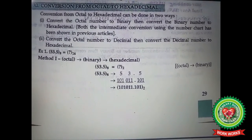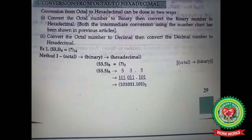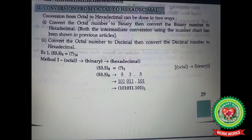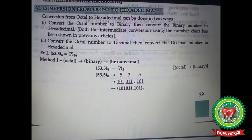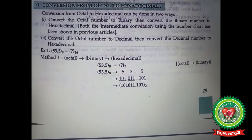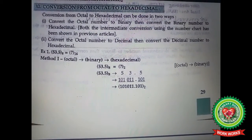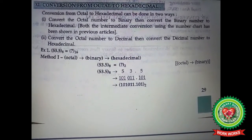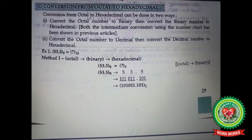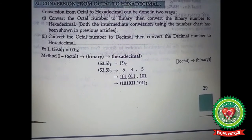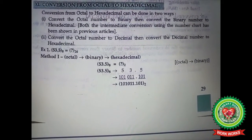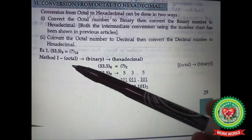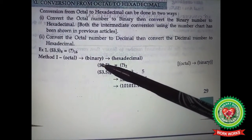Open your book at page number 29. The next conversion is octal to hexadecimal. There are two ways to do this. I'm going to explain the first method: first convert the octal number to binary, then convert that binary number to hexadecimal.